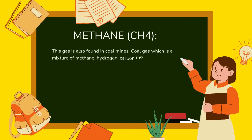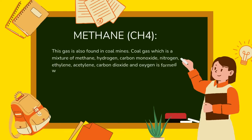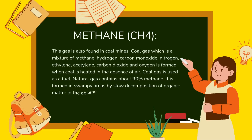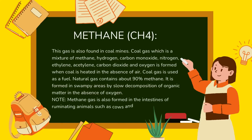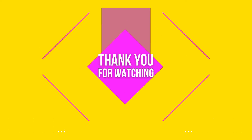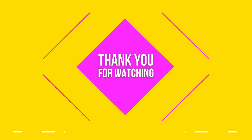Coal gas is a mixture of methane, hydrogen, carbon monoxide, nitrogen, ethylene, acetylene, carbon dioxide, and oxygen, formed when coal is heated in the absence of air. It is used as a fuel. Natural gas contains about 90% methane and is formed in swampy areas by slow decomposition of organic matter in the absence of oxygen. Methane gas is also formed in the intestines of ruminating animals such as cows and buffaloes, and in the bodies of termites.